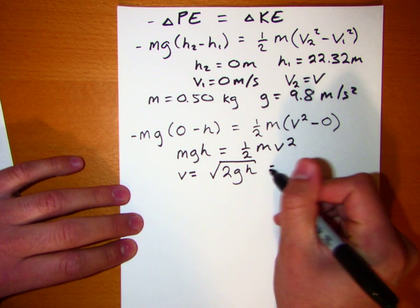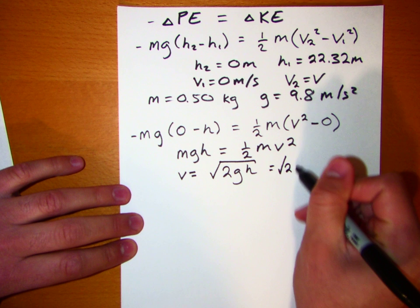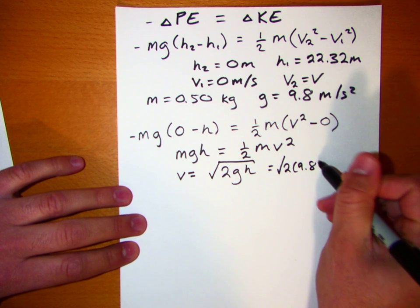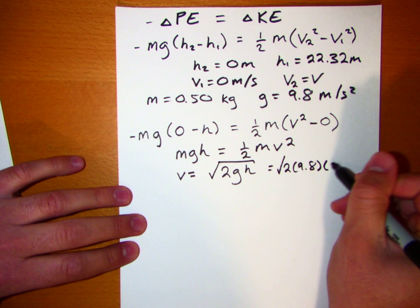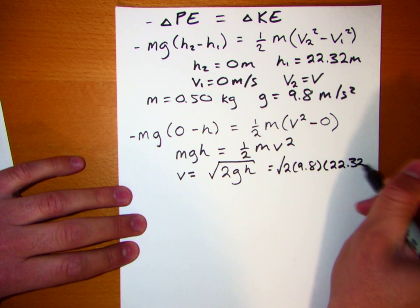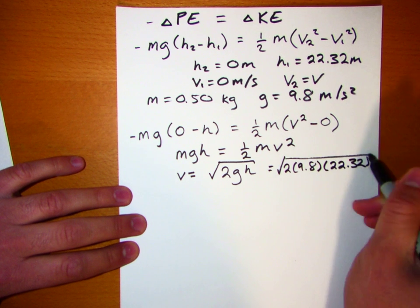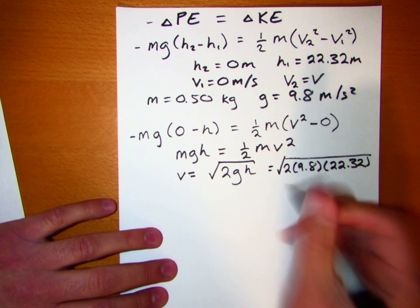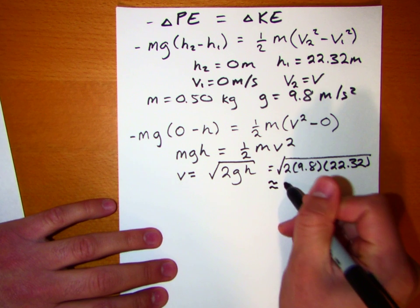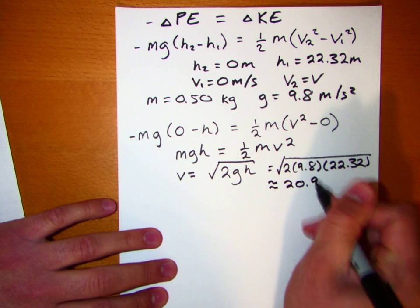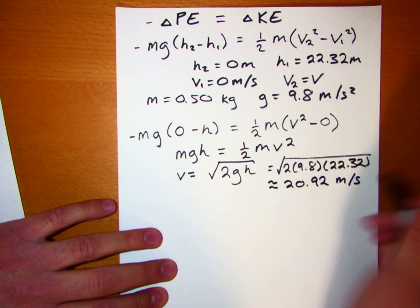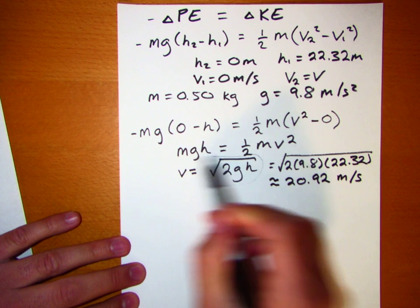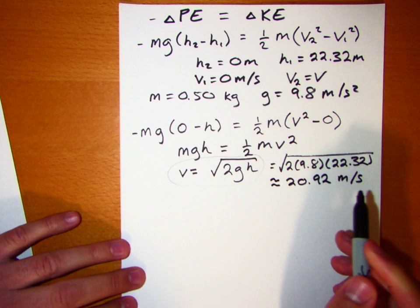If we actually calculate this: the square root of 2 times 9.8 meters per second squared times 22.32 meters gives approximately 20.92 meters per second. Let's keep that aside and hold onto the symbolic equation.